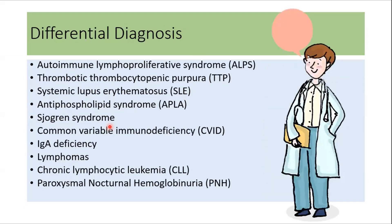The differential diagnosis is broad. We need to rule out autoimmune lymphoproliferative syndrome and thrombotic thrombocytopenic purpura, which is a very important differential and should be considered in all patients. Other differentials include SLE, antiphospholipid syndrome, Sjögren's syndrome, common variable immunodeficiency, IgA deficiency, non-Hodgkin's lymphoma, chronic lymphocytic leukemia, and paroxysmal nocturnal hemoglobinuria.